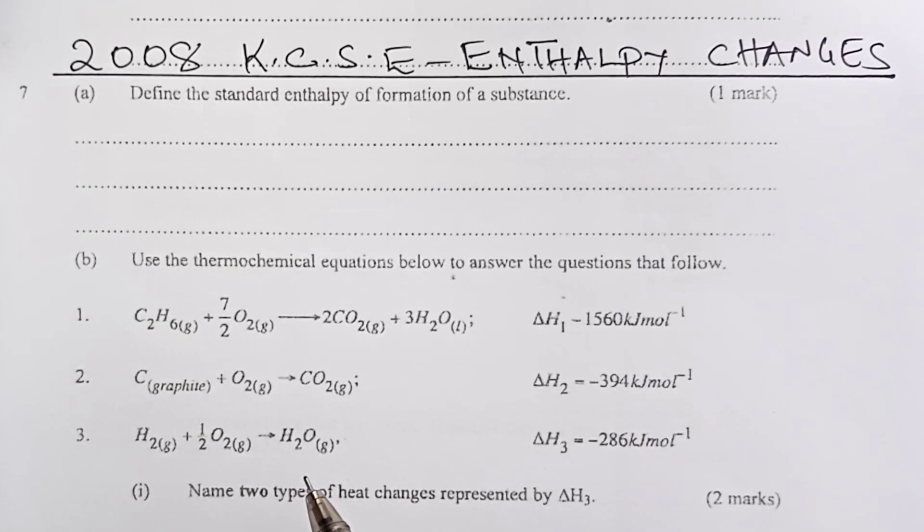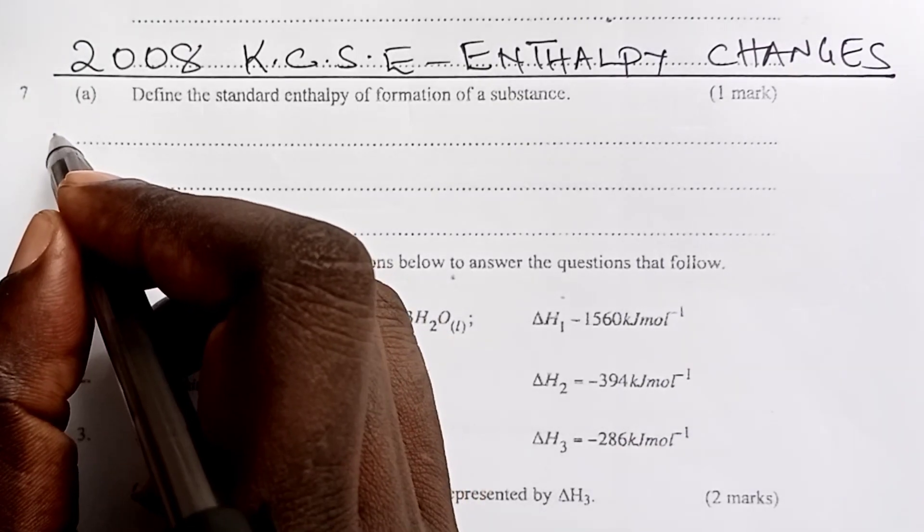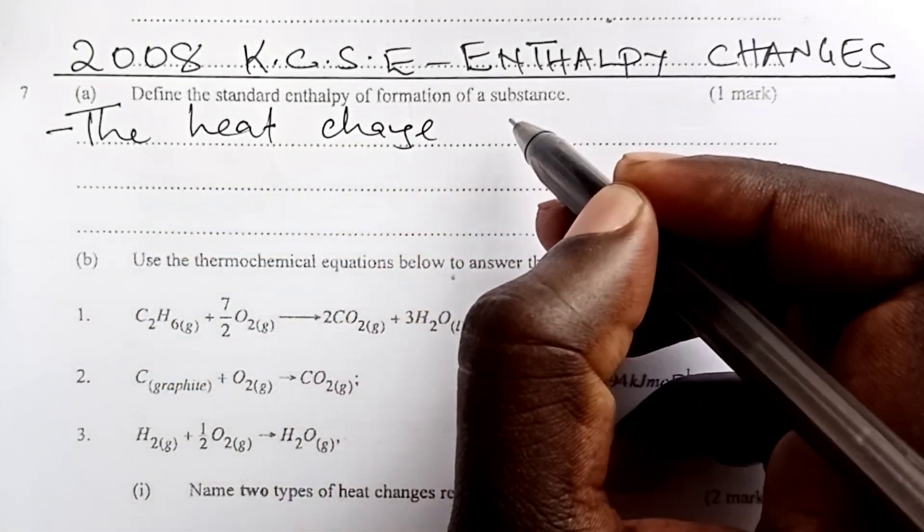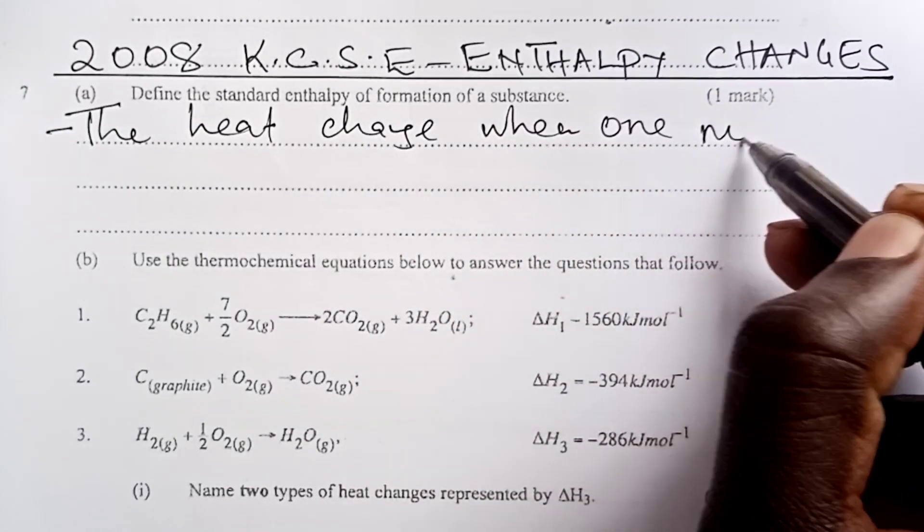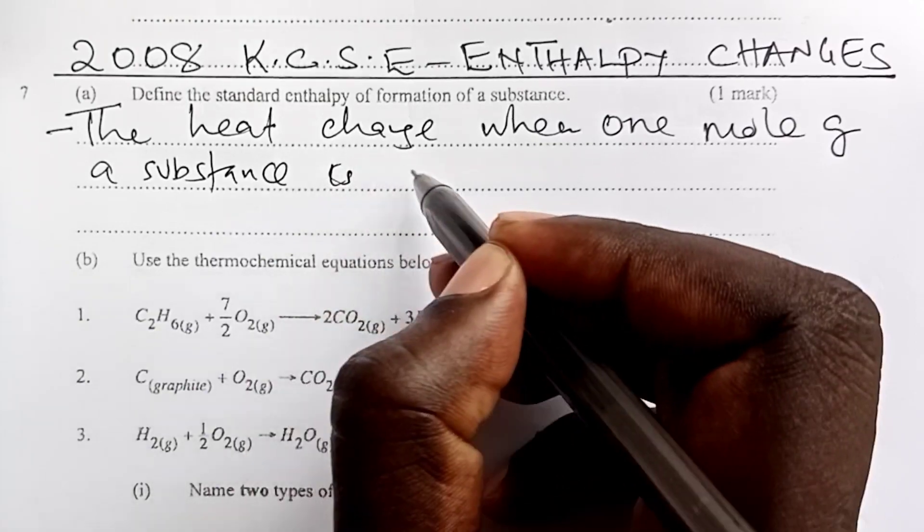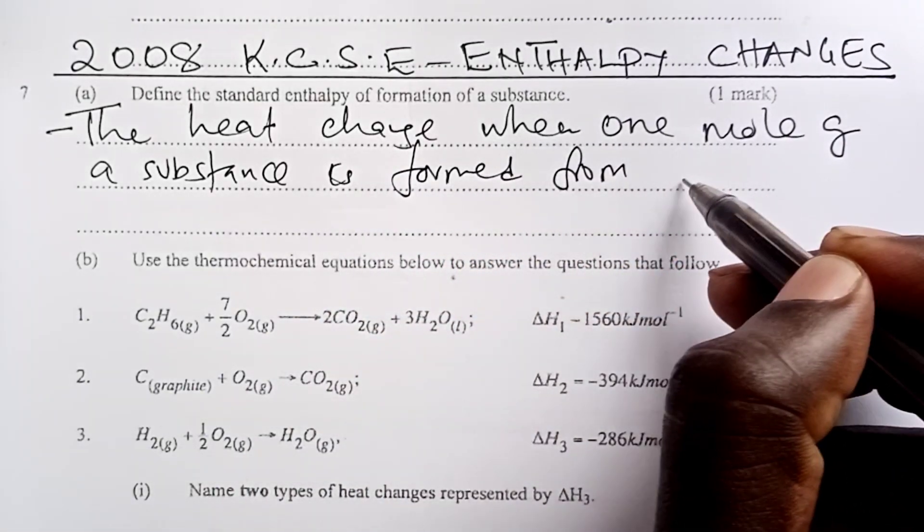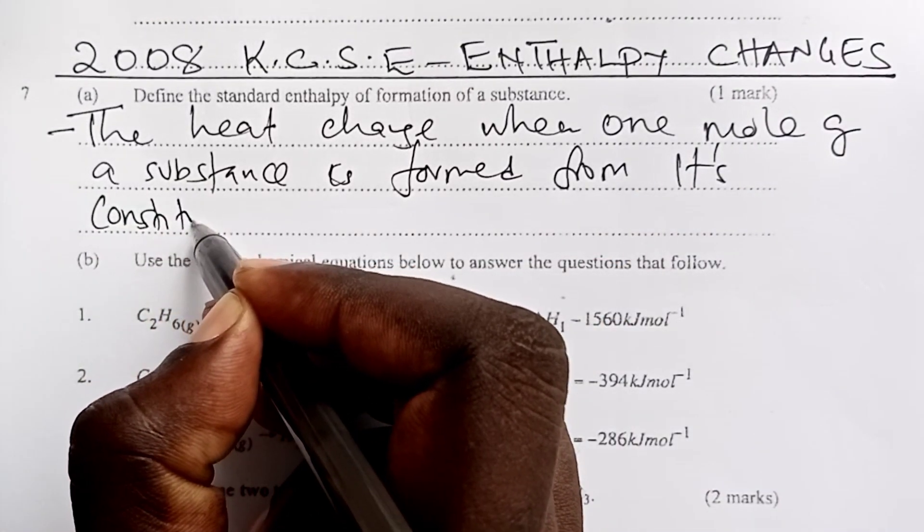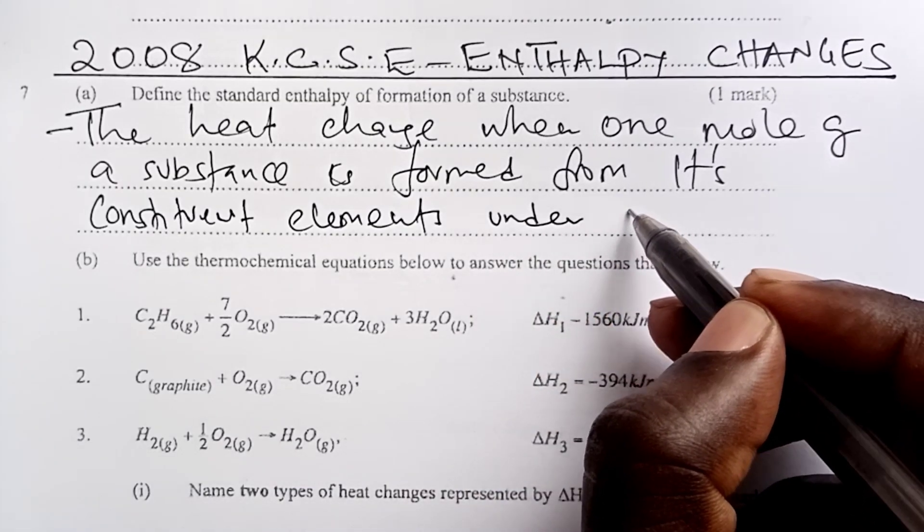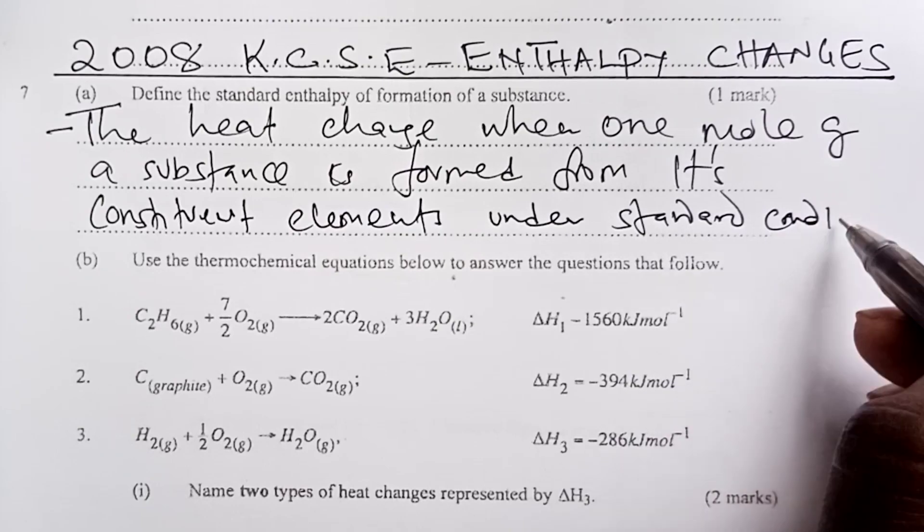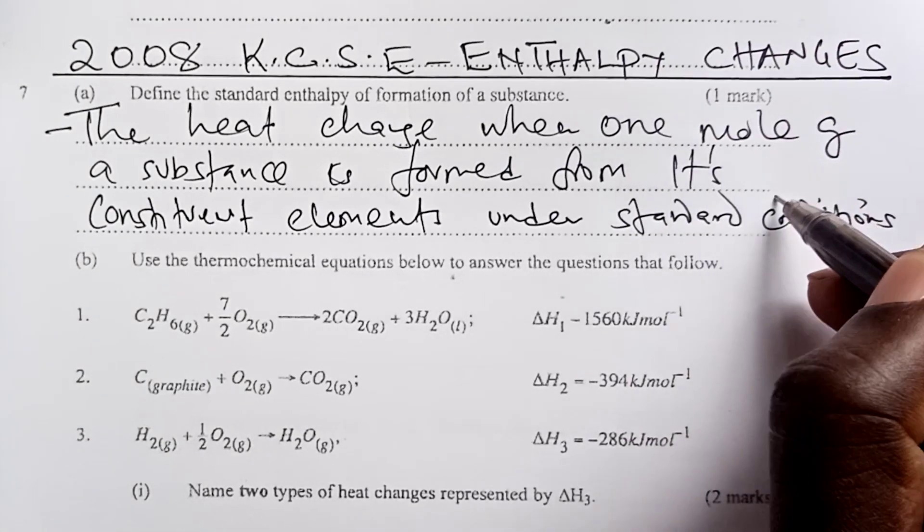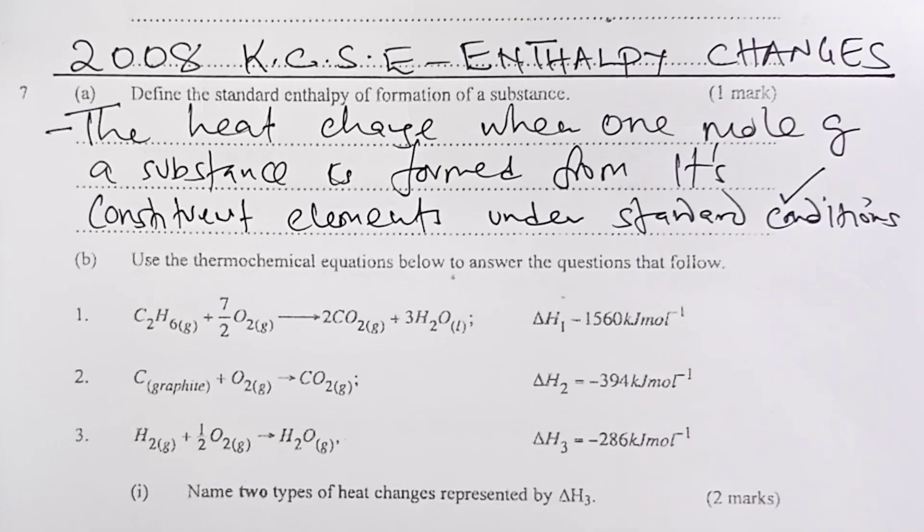Define the standard enthalpy of formation of a substance. This is the heat change when one mole of a substance is formed from its constituent elements under standard conditions. That would be the definition of the enthalpy of formation, or we can call it the molar heat of formation.